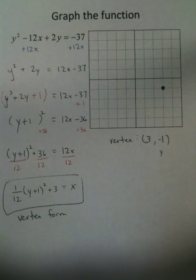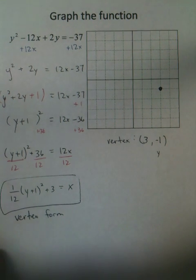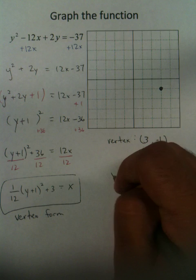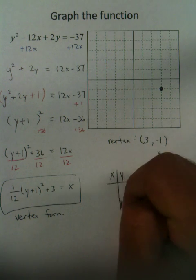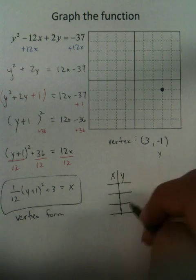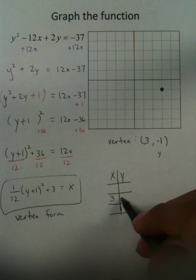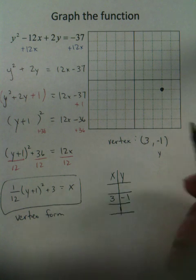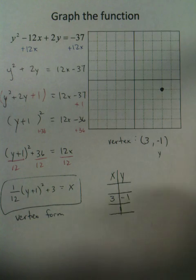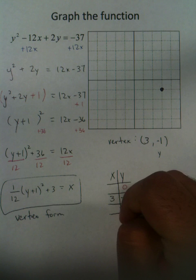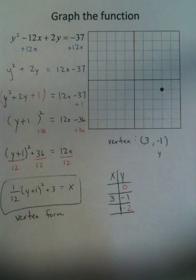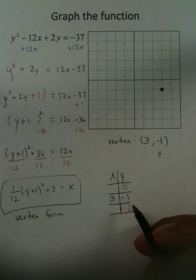So, from this point, now we just need some inputs and outputs next to that point. Set up an X and Y table. The vertex is always in the middle. And since we're using Y as an input, let's pick some Y values, such as, let's go 1 below it, and 1 above it. And we just input and output these values that you've calculated.